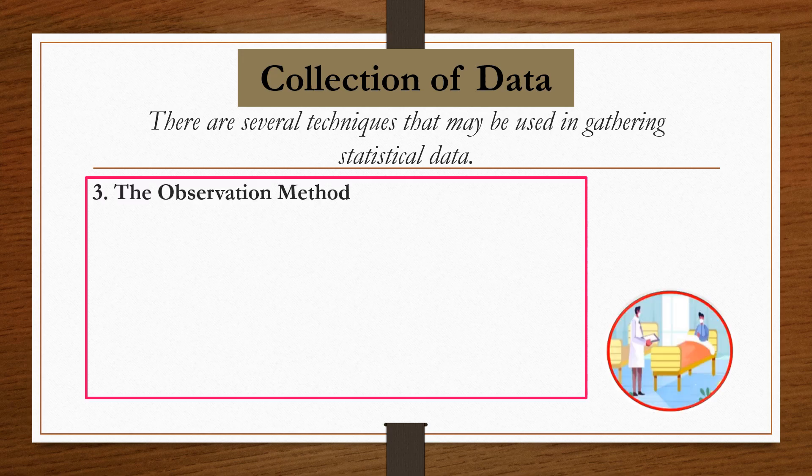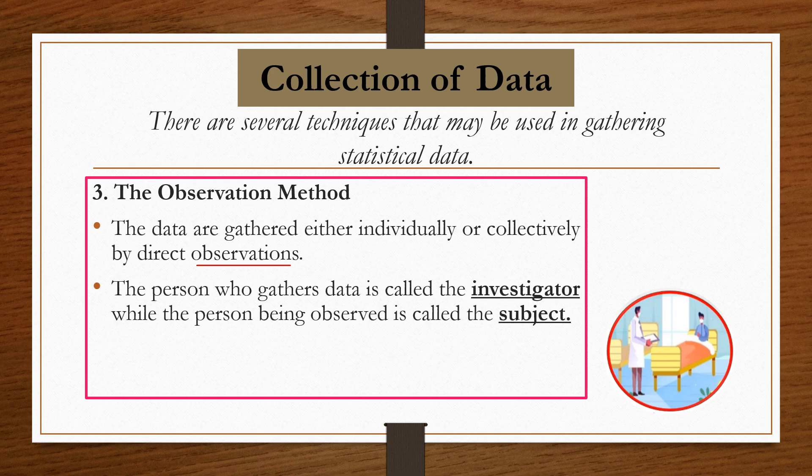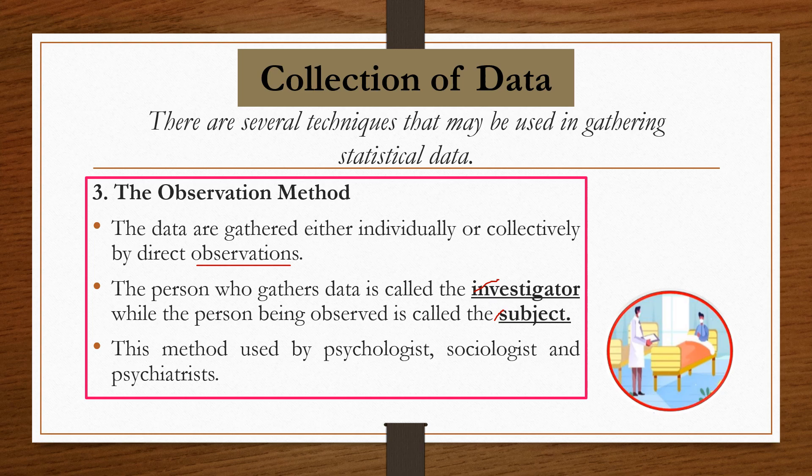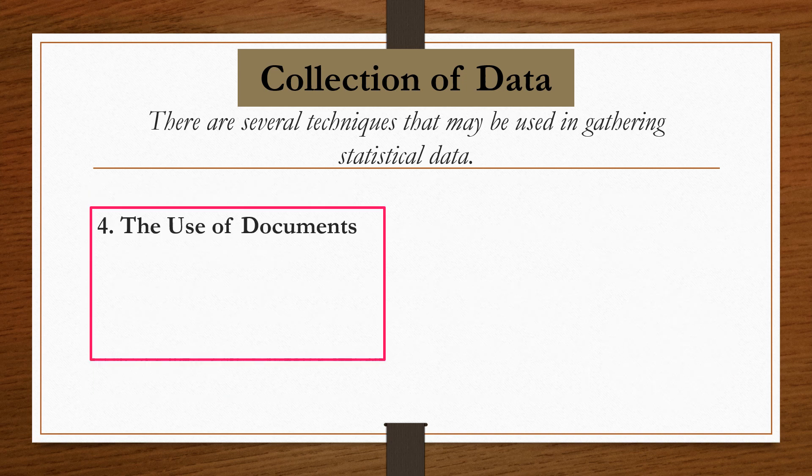The third one is the observation method. The data are gathered either individually or collectively by direct observations. The person who gathers the data is called the investigator, while the person being observed is called the subject. This method is used by psychologists, sociologists, and psychiatrists. For example, in the time of COVID-19 pandemic, researchers obtain data by observing behaviors of patients. From their observations, they can obtain data.